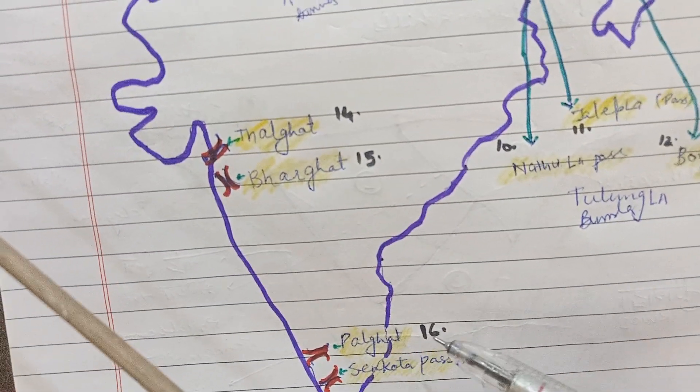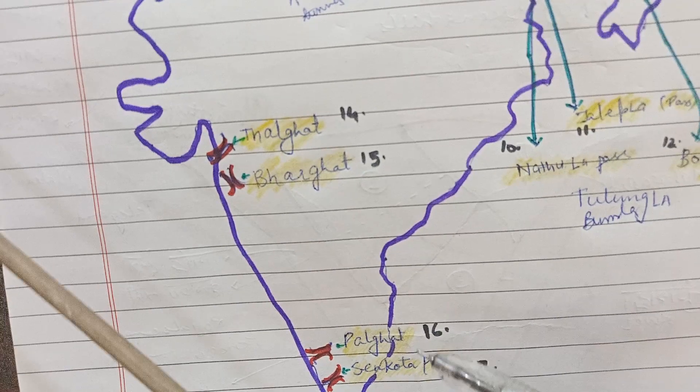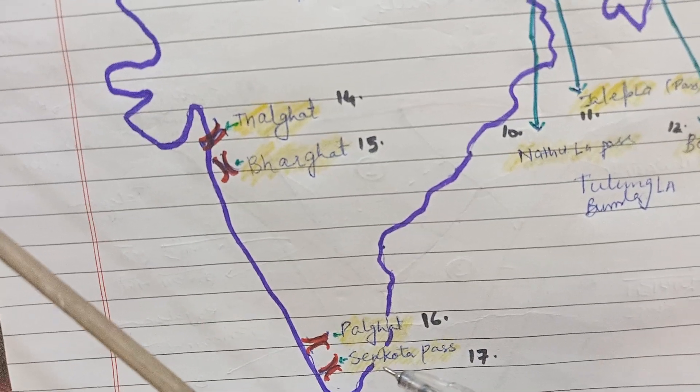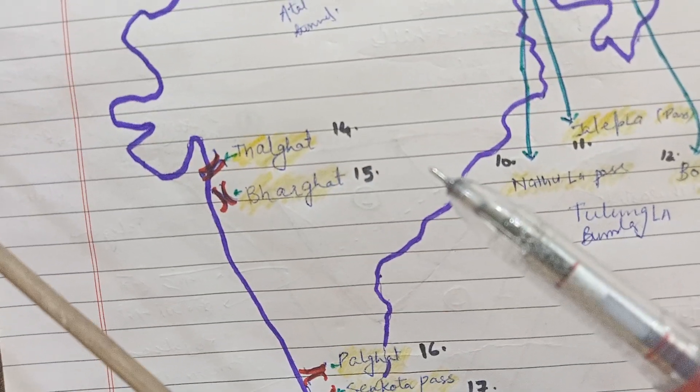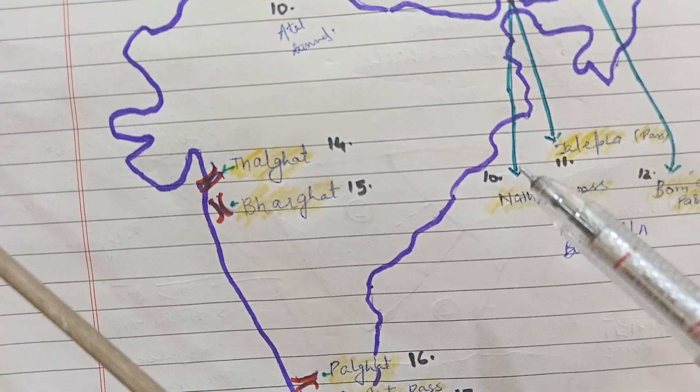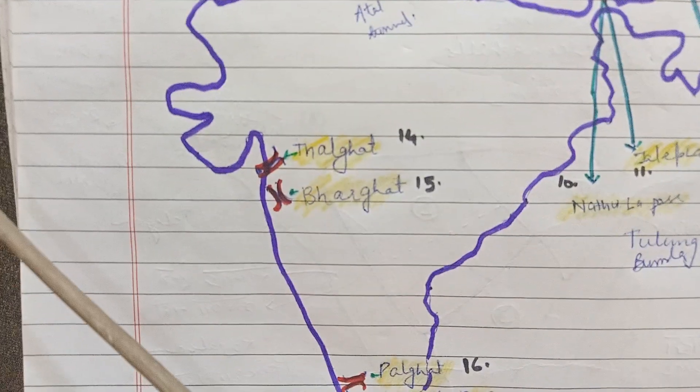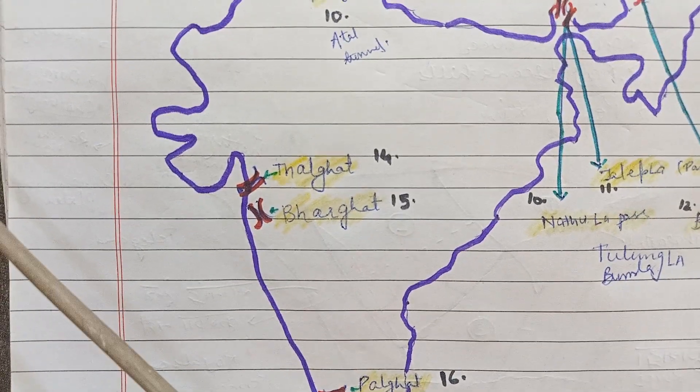These are Palghat, Senkota, Thalghat, and Bharghat. These are all the ghats in the southern parts.